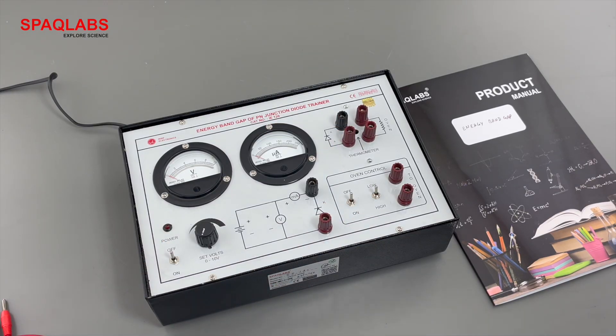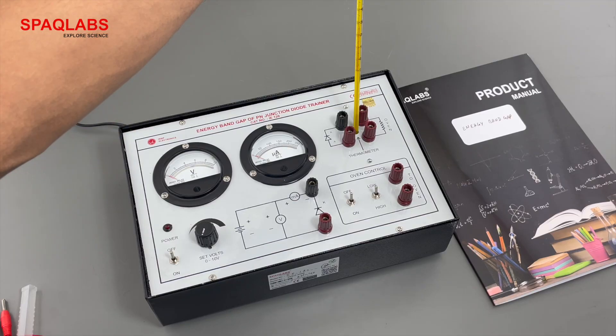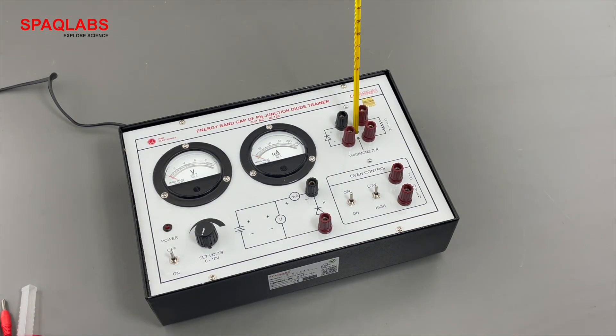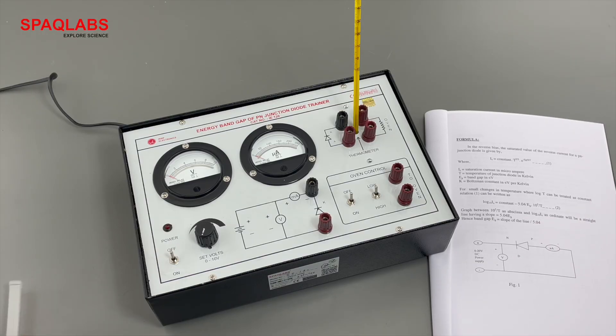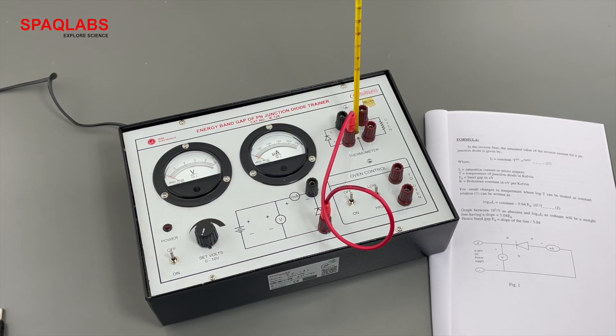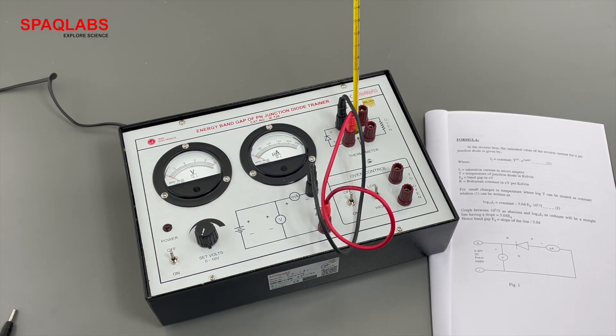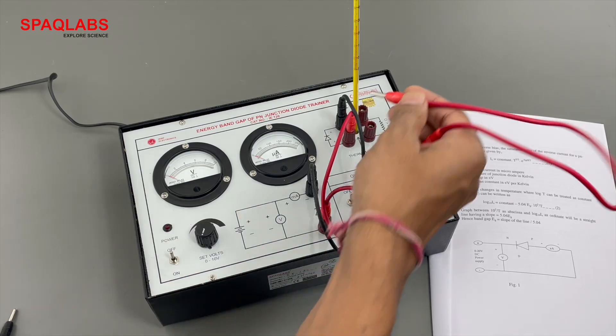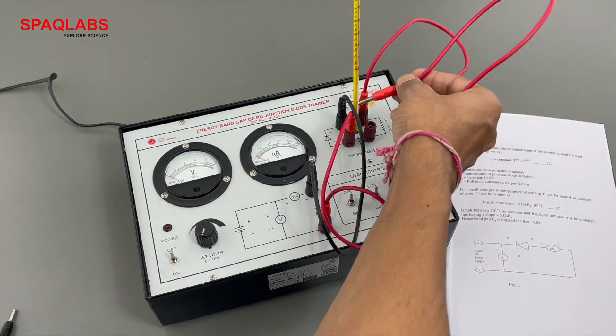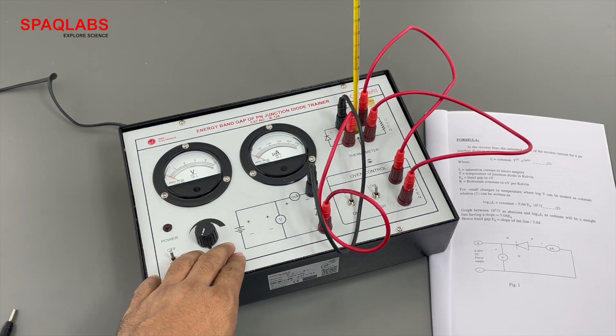Now we are going to place the thermometer. Do the connections as shown in the circuit diagram. Connect the diode, connect the O1. For this experiment, the diode is connected in reverse bias.